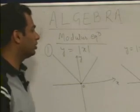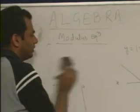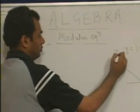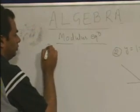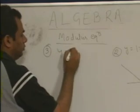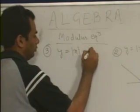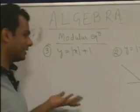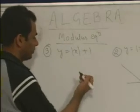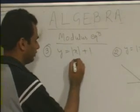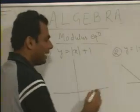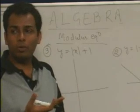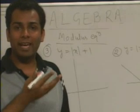If y is equal to mod of x plus 1, the graph is obtained by adding 1 to the standard graph. Remember that when adding a constant to any function, each and every point shifts by that amount in the upward direction.